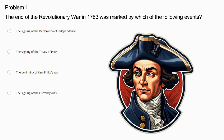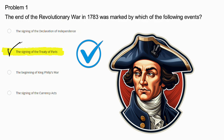Problem number 1. The end of the Revolutionary War in 1783 was marked by which of the following events? The signing of the Declaration of Independence, the signing of the Treaty of Paris, the beginning of King Philip's War, or the signing of the Currency Acts. The correct answer is the signing of the Treaty of Paris. This event officially ended the Revolutionary War by recognizing American independence and setting the boundaries for the new nation. The other answers are incorrect because they all happened at different times: the Declaration of Independence was signed in 1776, King Philip's War began in 1675, and the Currency Acts were passed in 1764.